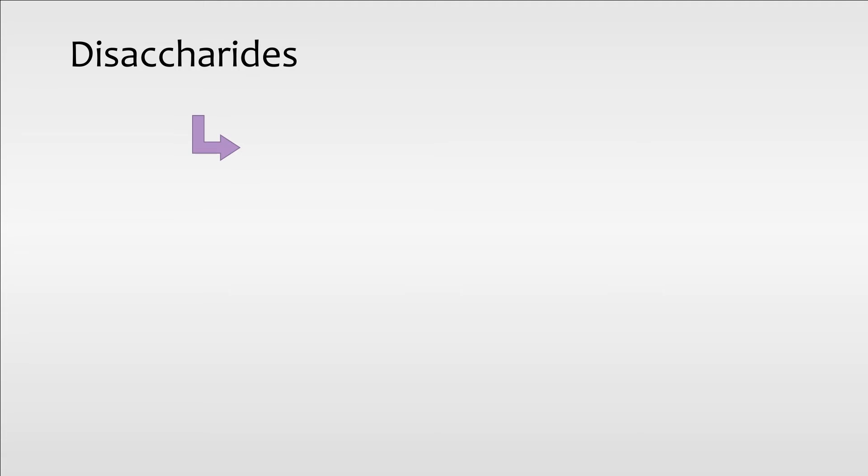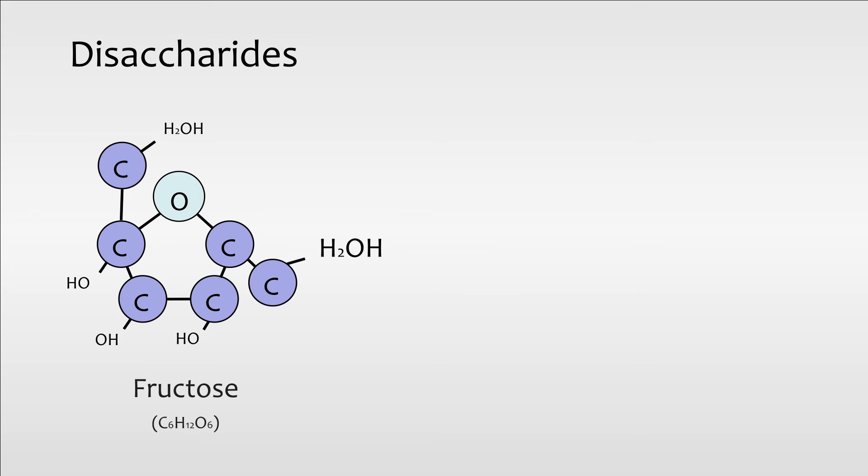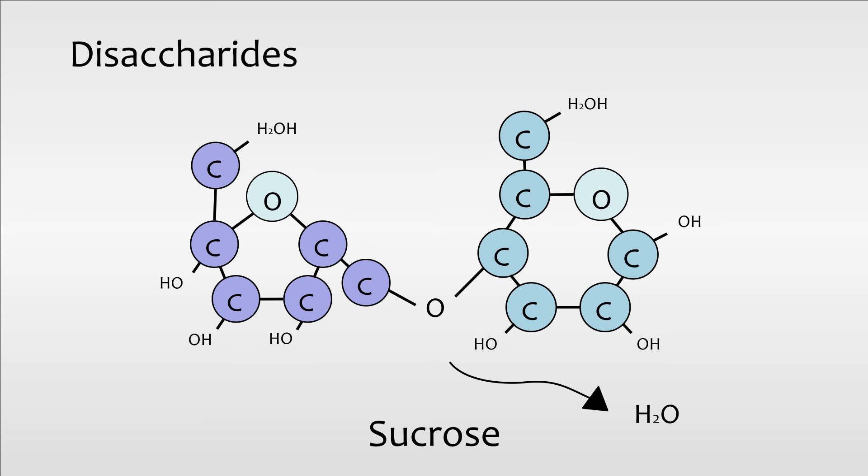Disaccharides are composed of 2 monosaccharides bound together through a dehydration reaction. For example, fructose and glucose are combined through a dehydration reaction to form a disaccharide called sucrose, also known as table sugar, plus a molecule of water.